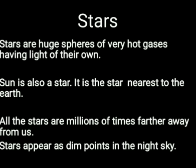Almost all the stars are millions of times farther away from us as compared to the distance of the sun from us. That's why the sun appears like a ball to us, but other stars appear only as a point or dot. Stars appear as a dim point in the night sky. This is due to their very large distance from us. They do not disappear during daytime — they are present in the sky all the time, but they are not visible during daytime due to the sun's brightness.